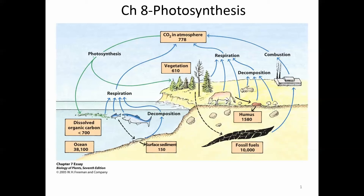This lecture will cover chapter 8 from the Campbell Biology textbook on photosynthesis. Photosynthesis is a major component of the carbon cycle, along with cellular respiration. In the carbon cycle, organisms like you and I respire, but don't forget plants respire as well, burning glucose and other macromolecules producing carbon dioxide, which plants and other green organisms can then take in through the process of photosynthesis.